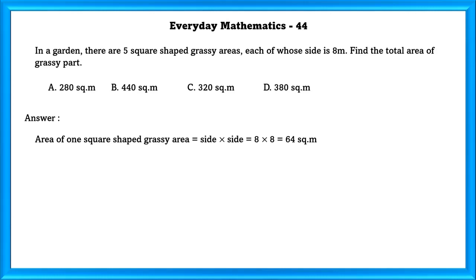Area of 1 square-shaped grassy area is equal to 64 square meters. Therefore, area of 5 square-shaped grassy areas is equal to 320 square meters.